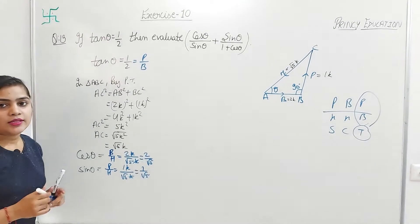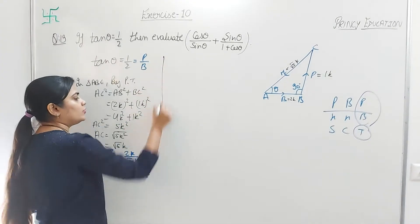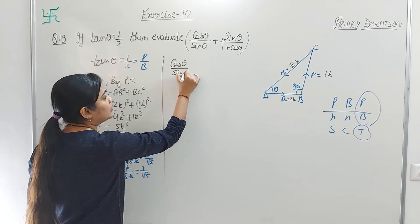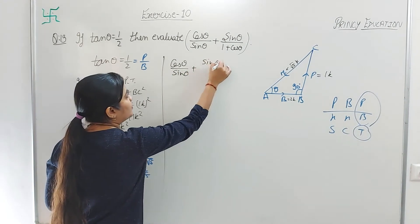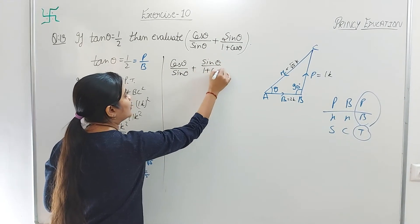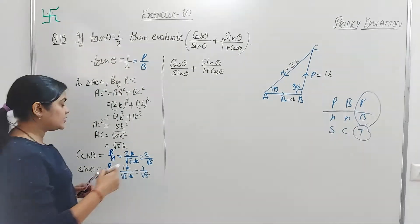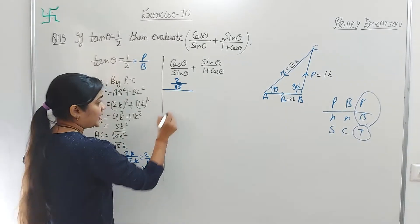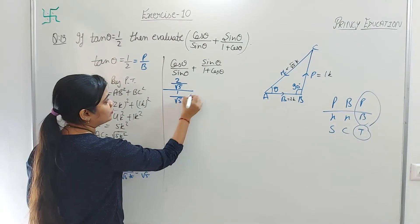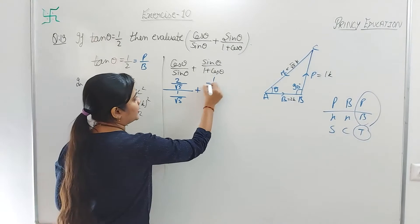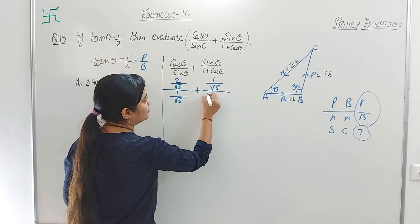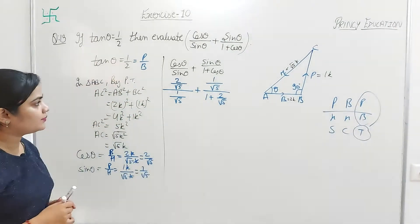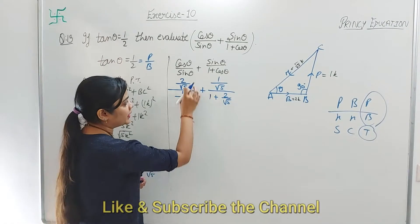Taking the left hand side, find the value of: cos θ upon sin θ plus sin θ upon 1 plus cos θ. Put the values: (2/√5) upon (1/√5) plus (1/√5) upon (1 + 2/√5).